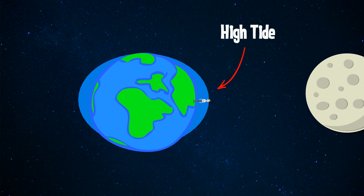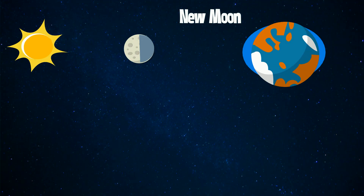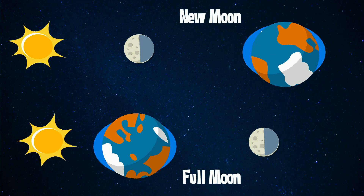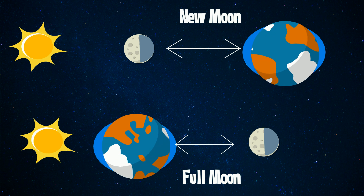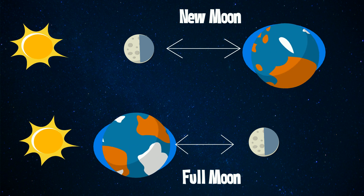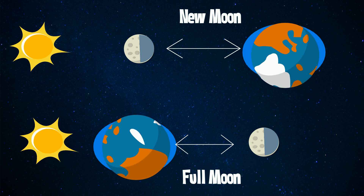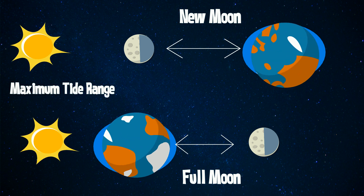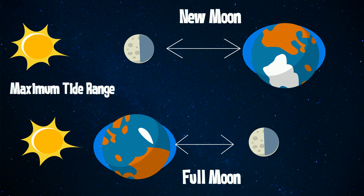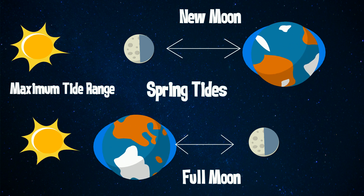Approximately twice a month, around new moon and full moon, when the sun, moon, and earth form a line, the tidal force is at its maximum and the tidal range is at its maximum. These are called spring tides.